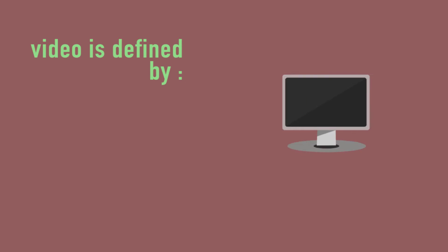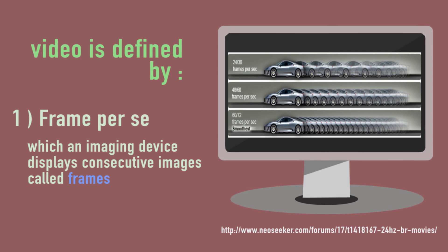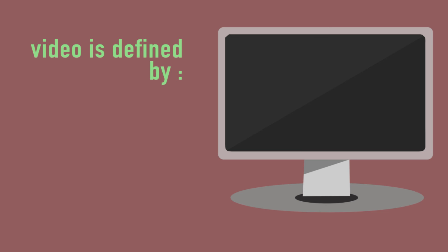Video is defined by two types. First is frame per second, and secondly is resolution.